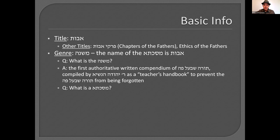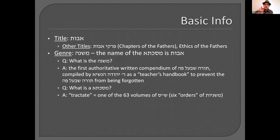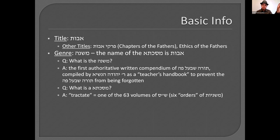What do we mean by Masechta? It's a tractate — a volume, one of the divisions of Shas, which is the six orders of the Mishnah. So this is part of the entire Mishnayos. And then we call each unit a Mishnah. Students have a common habit of calling it a Pasuk, but Pasuk is really a unit of Torah SheBiKhtav. In Pirkei Avos, we would call each statement or paragraph a Mishnah.